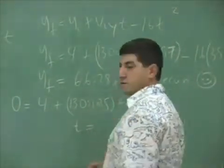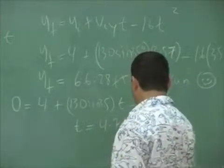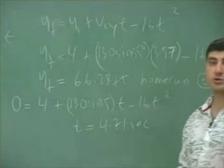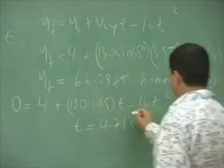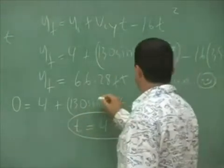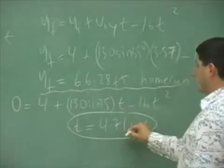T is 4.71 seconds. So it takes 4.71 seconds to hit the ground. So from this we know it's a home run. 4.71 seconds to hit the ground.